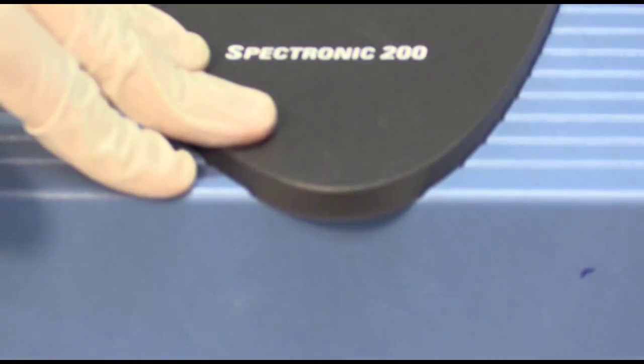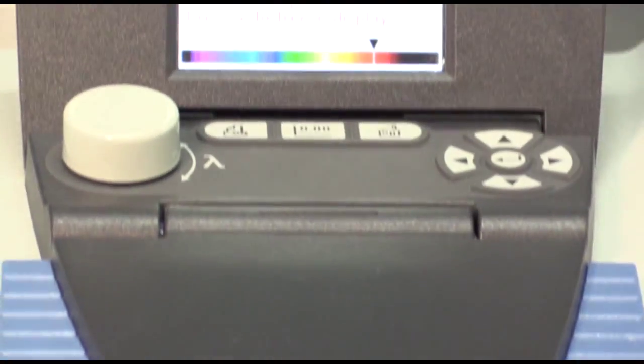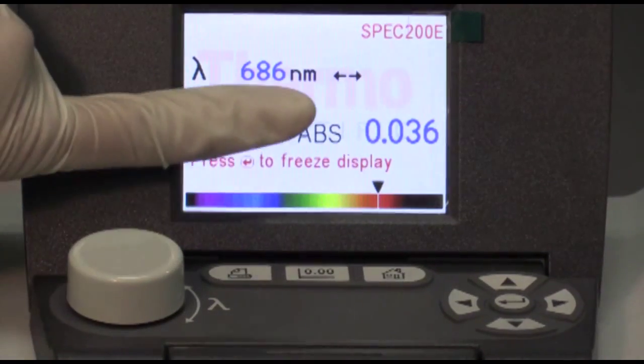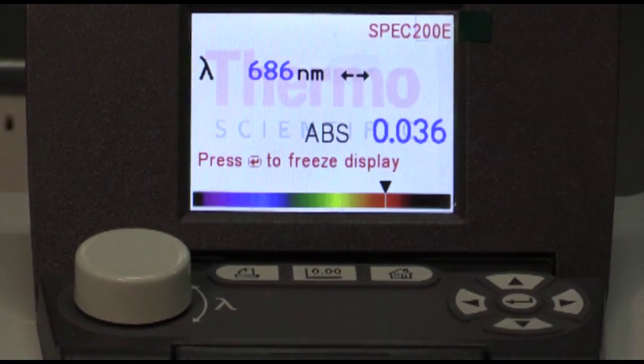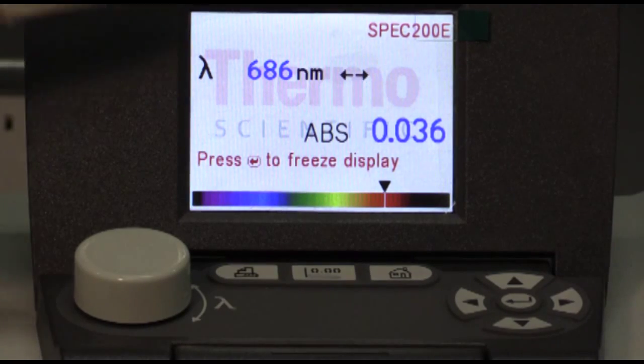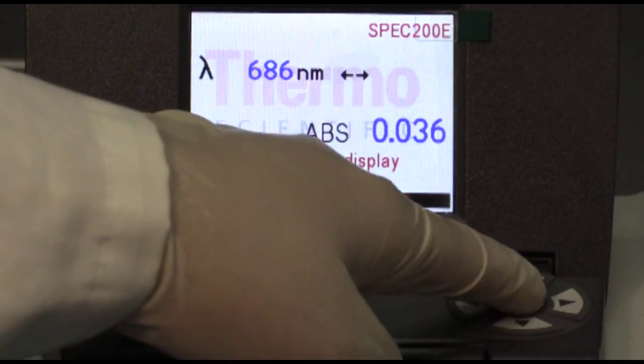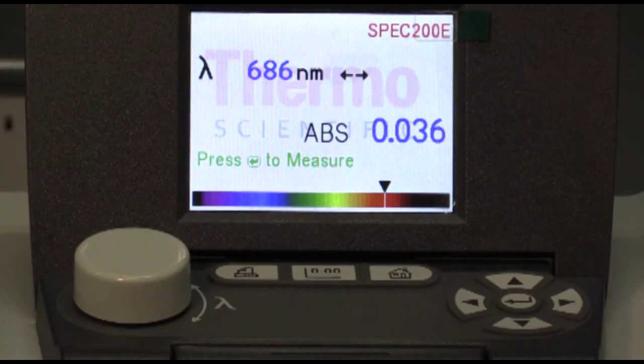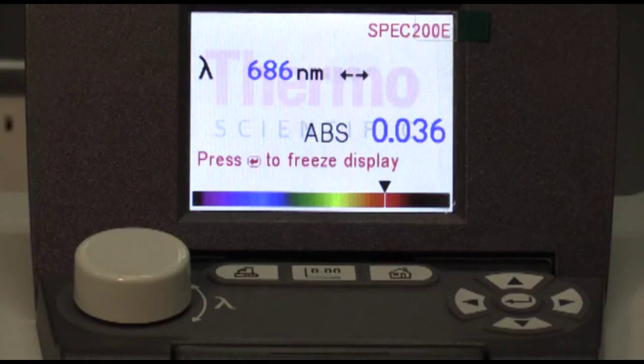Close the compartment, and just wait for the reading to stabilize. Make sure that the numbers are always flashing, which means it's reading in real time. If it is not flashing, make sure you press the enter button until it is flashing, and then you can take the reading.